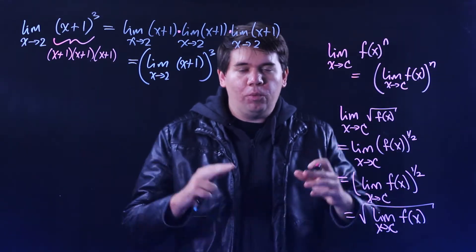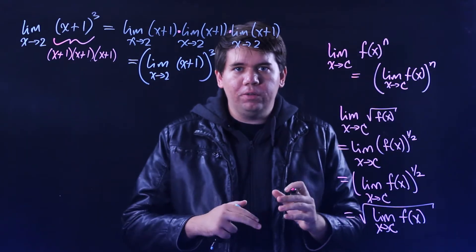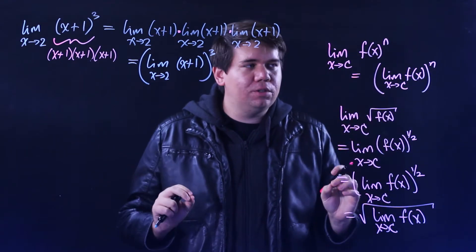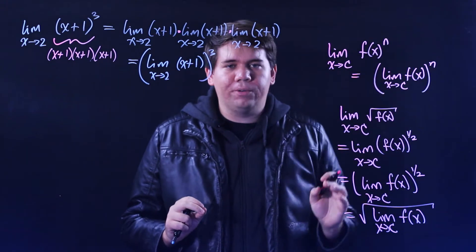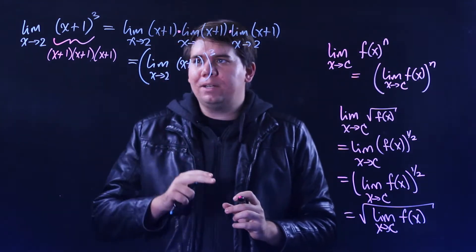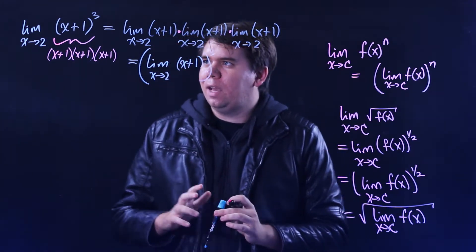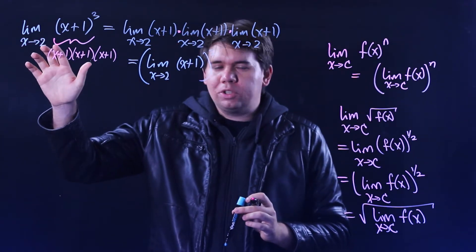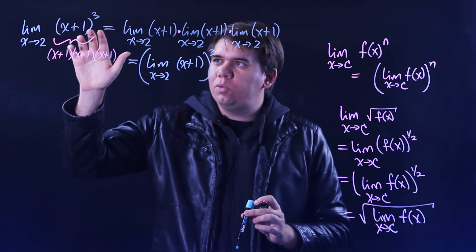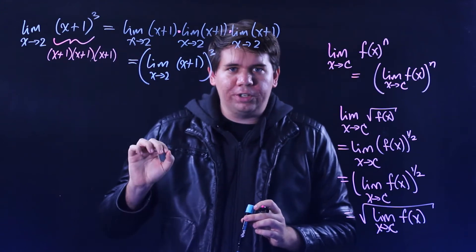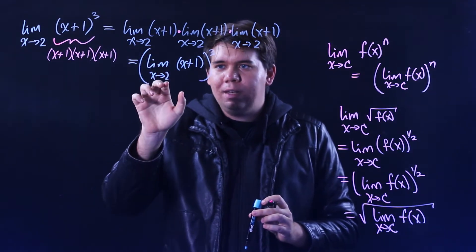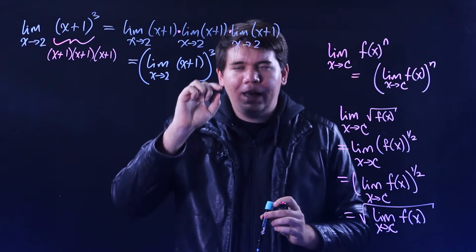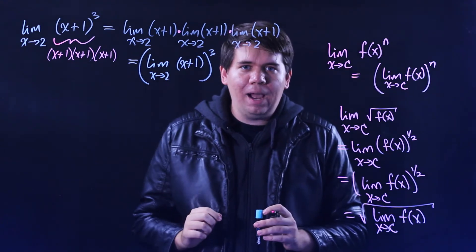Square roots, cube roots, fourth roots — any powers. So let's come back to this example. The limit as x approaches 2 of (x+1) to the third is just whatever the limit of (x+1) is, raised to the third power.